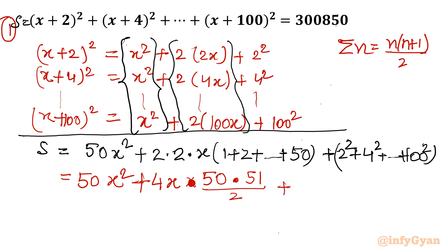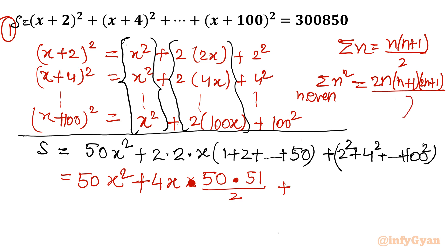Now one interesting formula comes into the picture: the sum of even squares. The formula for σn² where n is even is 2n(n+1)(2n+1)/3. This formula is very effective and can be used directly when required. There are 50 terms (2, 4, 6, ... up to 50 terms).